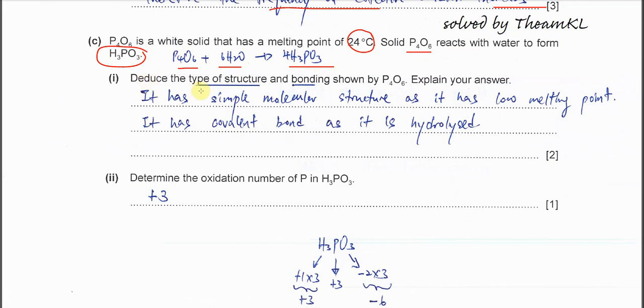Part 1: Deduce the type of structure. Structure we have simple or giant. Obviously this one is simple because very low melting point. So it's a simple molecular because phosphorus oxide is a molecule. Structure is simple molecular.